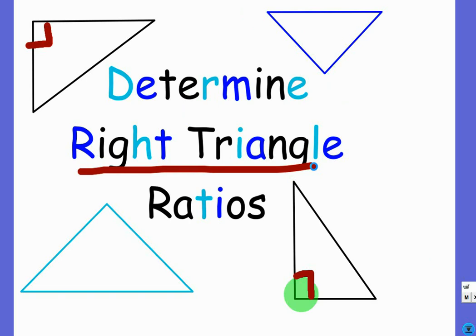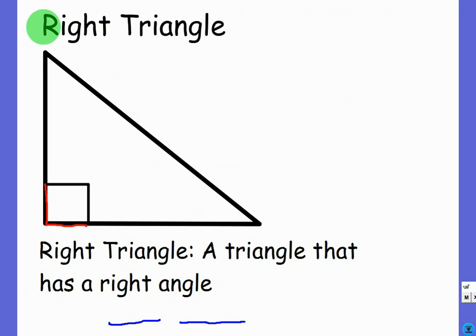Any questions on that? So, if it's 89 degrees or whatever, that's not a right triangle. And you don't have to write everything down. I think most people understand that a right triangle is a triangle that has a right angle.